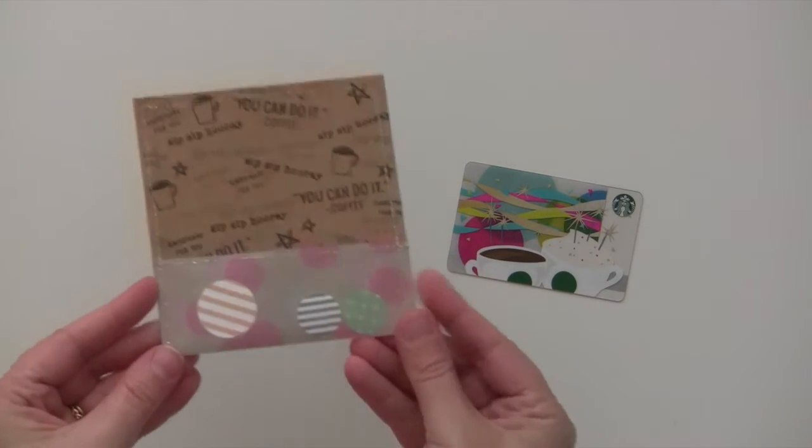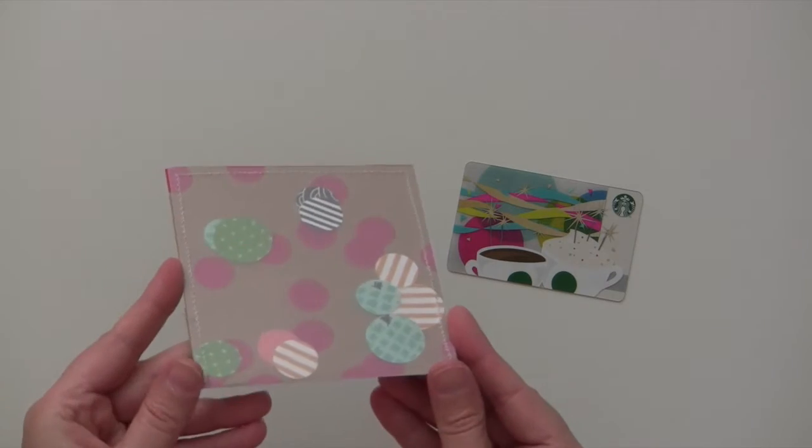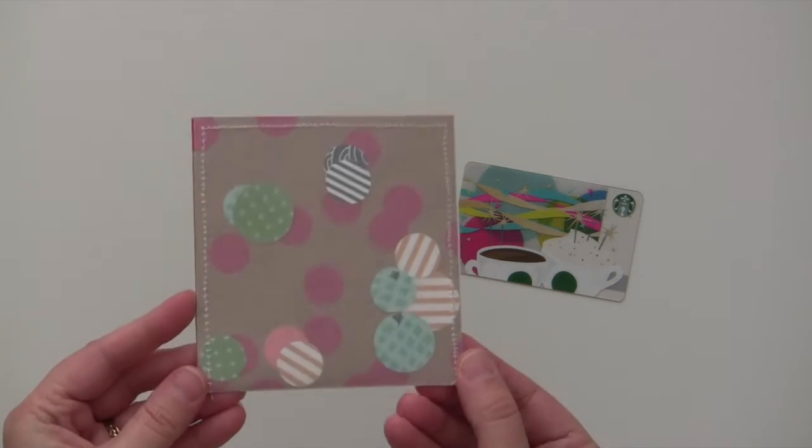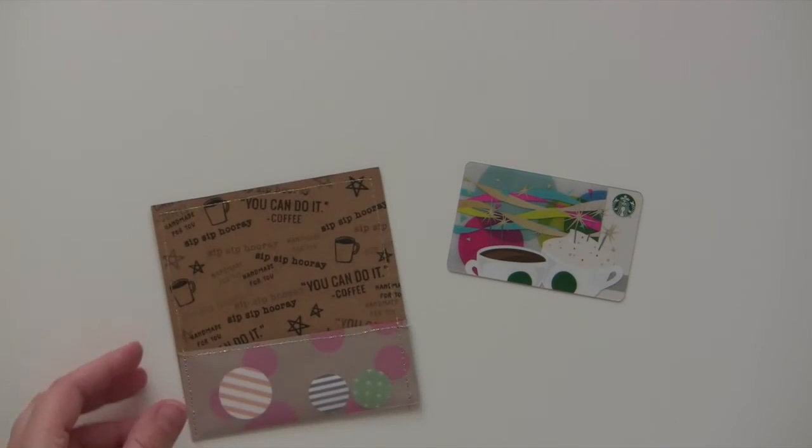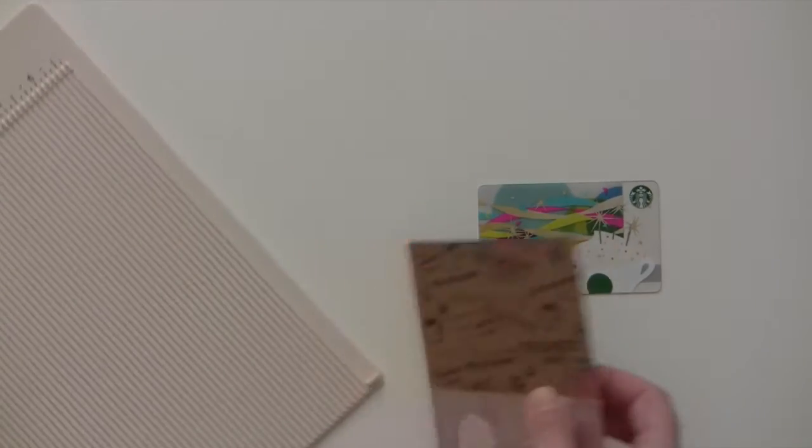I went ahead and sewed all the way around to make a little pocket there. Here's the other side so you can see it. Just remember you don't want to sew all the way through. That's why we sewed the two pieces together on the bottom flap first.